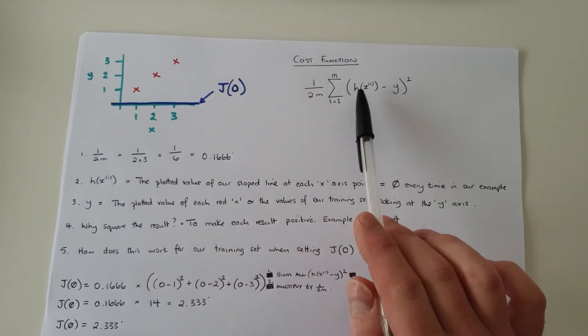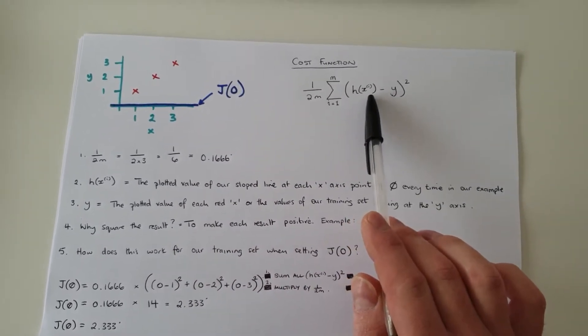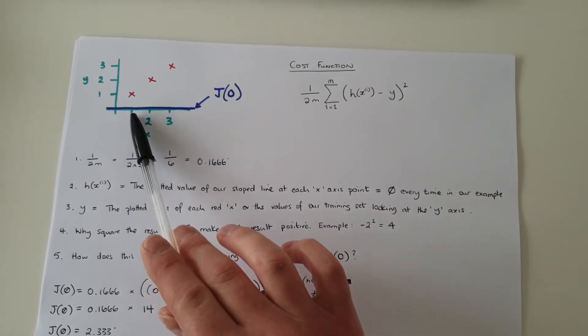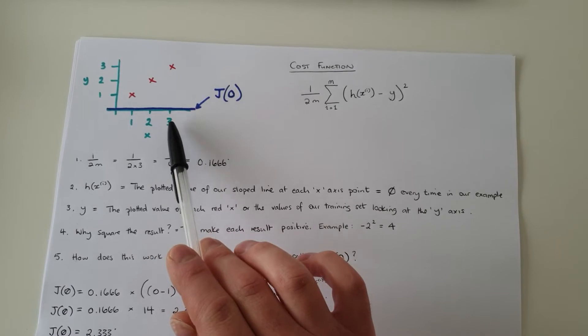So if we look at our cost function, where h of xi will always equal zero because at point one it's zero, at point two it's zero, and at point three it's zero.